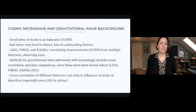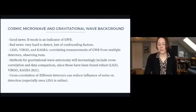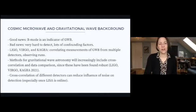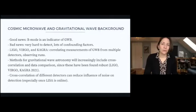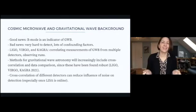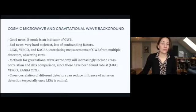There are tons of confounding factors, including noise in the instruments and noise from confounding parameters. There's been amazing work in LIGO, Virgo, and CAGR — they've recently reported correlating measurements of the gravitational wave background from multiple detectors and observing runs. One way of reducing noise is cross-correlation and data comparison: if you can show the same signal is present in distinct detectors, this reinforces reliability, because unless the exact same noise was present, the signal is more trustworthy.